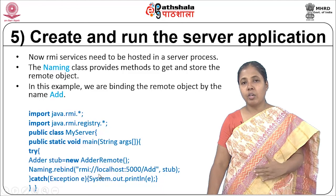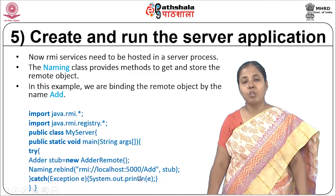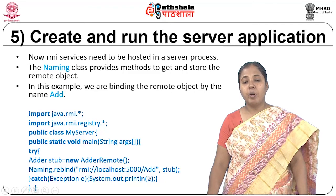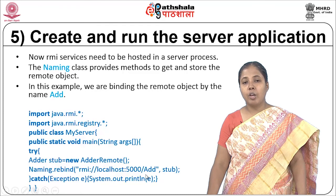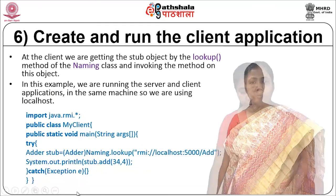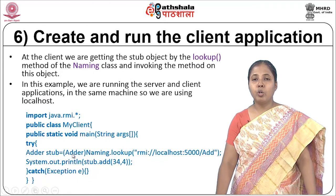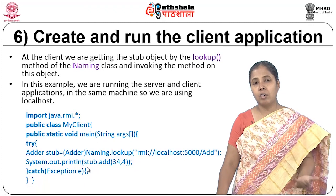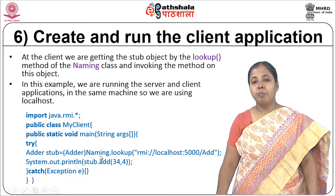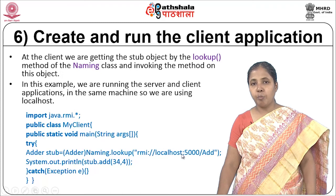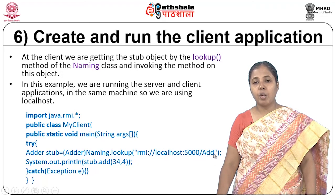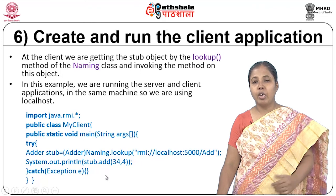Since both the client and server are running on the local machine, we specify localhost with port number 5000 and give a name 'add' by which the client will identify this remote method. We associate the reference of the remote interface with this name. For the client application, the client uses the Naming.lookup method with the same address to locate the service running on the server side. The remote method is bound with the name 'add', so we look it up by that name. Using the returned stub, we call the add method and get back the result. We start the RMI registry on port 5000, compile using RMIC to generate stub and skeleton, start the server, then start the client — the client connects to the server and the result is displayed.